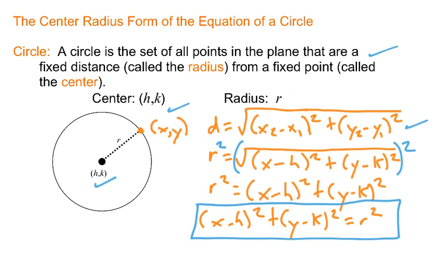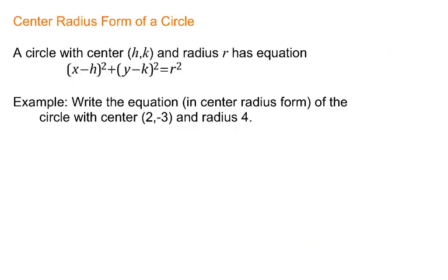Now, once you have that, it is very easy to use. On the next slide, I just rewrite what we just concluded here. The center radius form of a circle is given by that equation right there. The h and the k refer to the coordinates of the center of the circle. And the r refers to the radius.